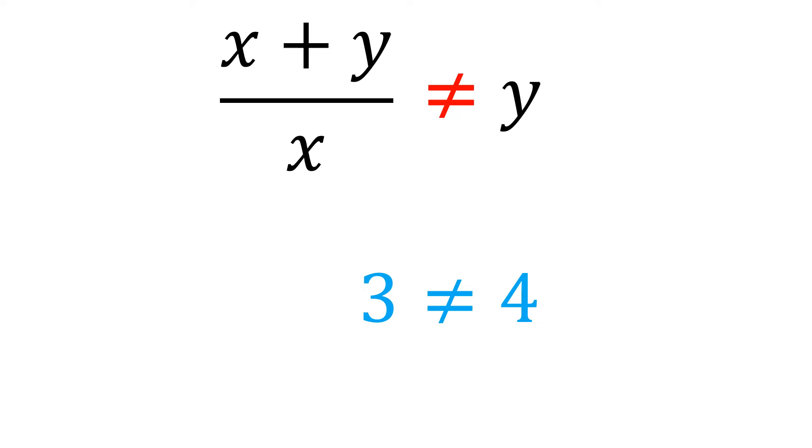So when can you cancel common terms in numerator and denominator? You can only cancel common terms if the operation is multiplication, not addition.